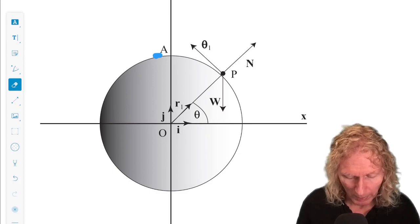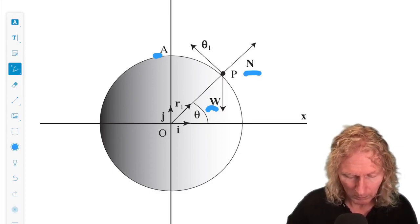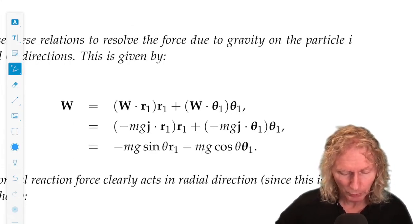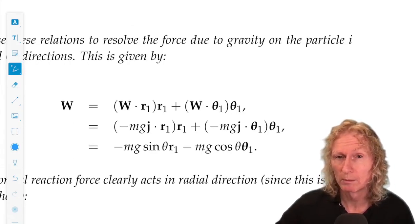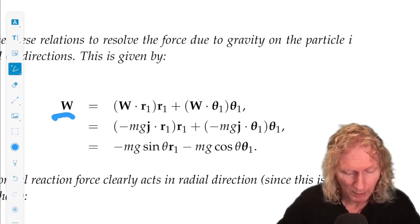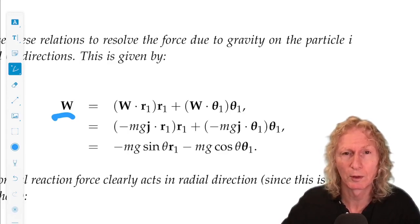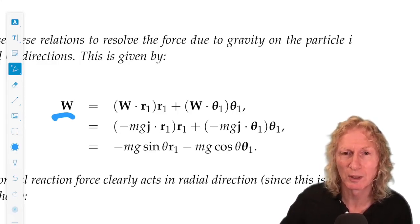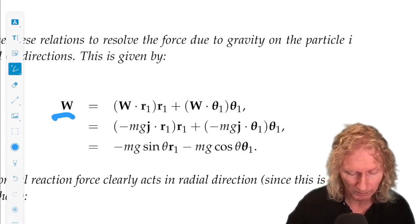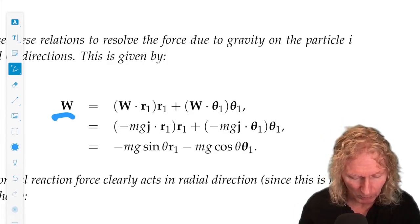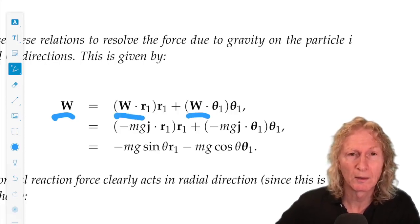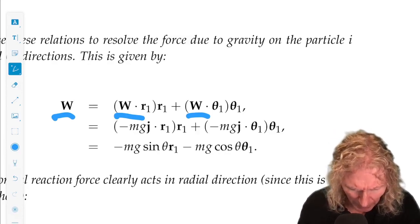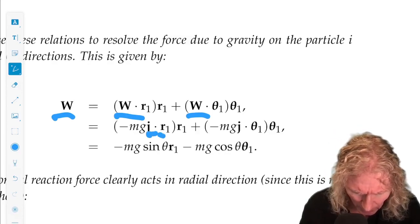So we have the weight and the normal force. We're using R1 and theta 1 to describe the motion. So we need to express the weight, the gravitational force, in terms of R1 and theta 1. The normal force, because it's normal, is automatically in the direction of R1.